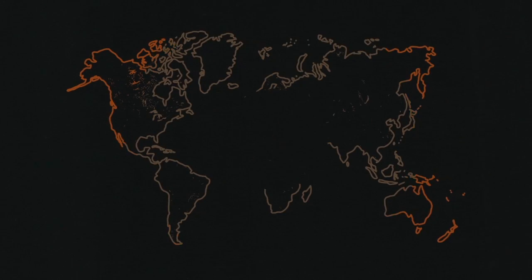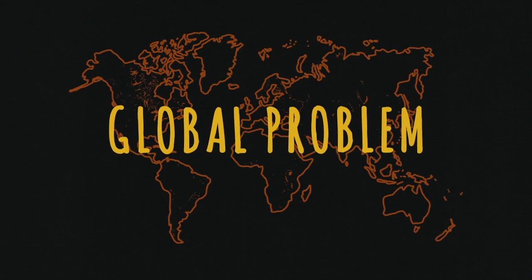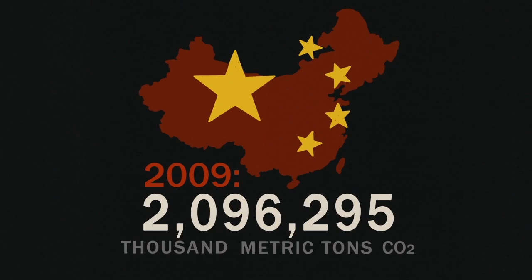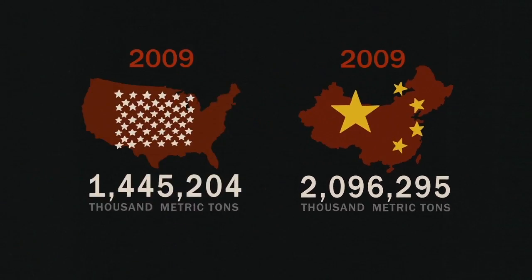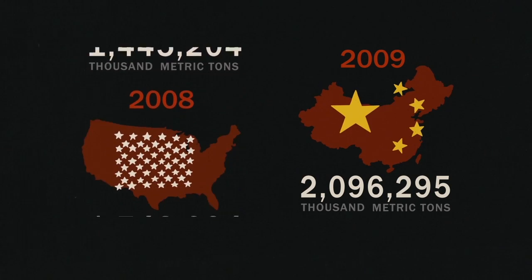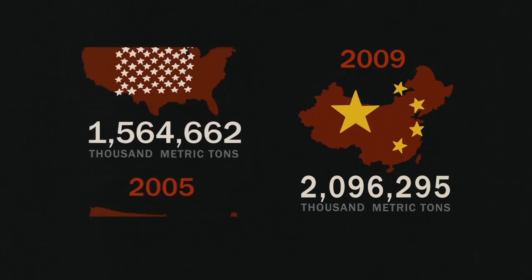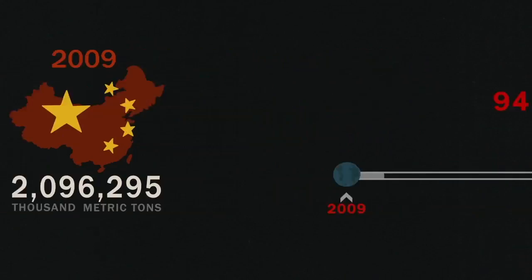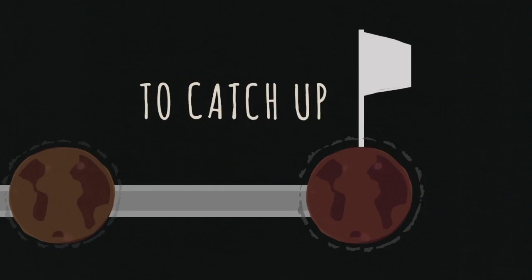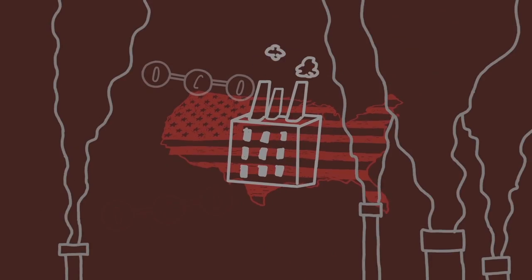But global warming is of course a global problem. In the last 10 years, China overtook the U.S. as the biggest producer of CO2. But the U.S. has been at this for longer. If emissions stayed at 2009 levels, it would take China 94 years to catch up to the U.S.'s cumulative CO2 production.